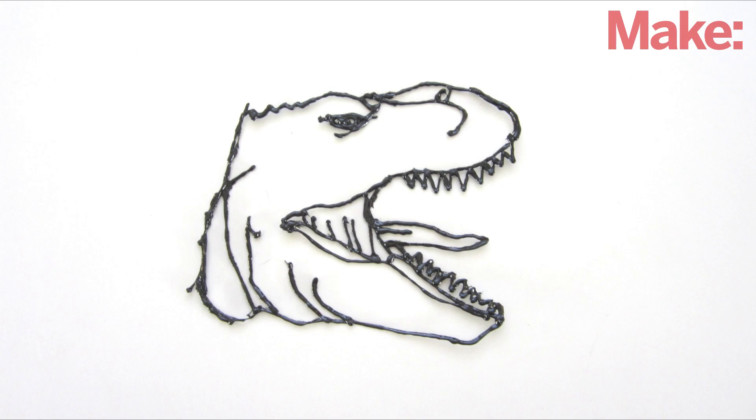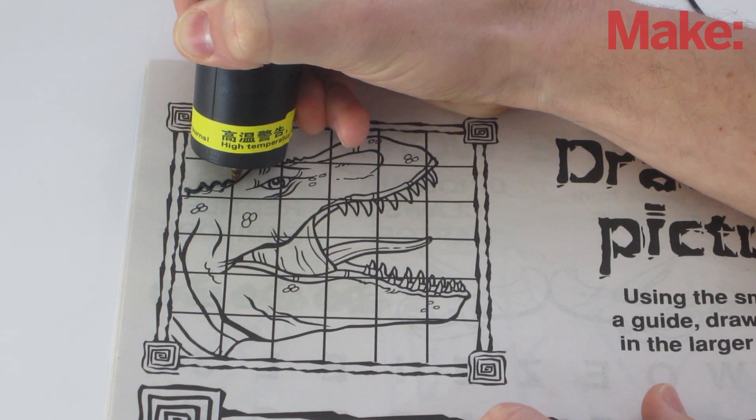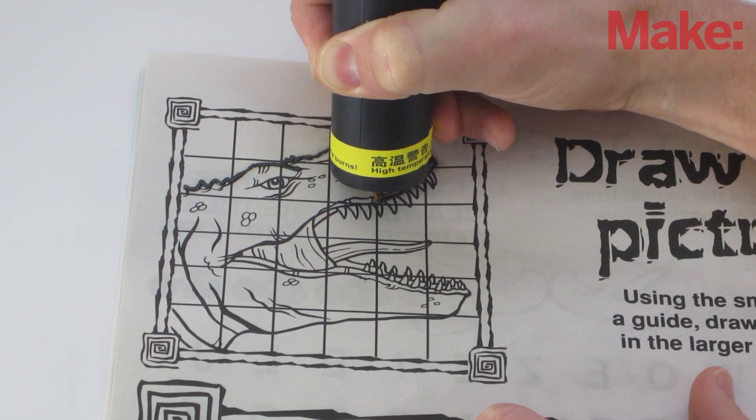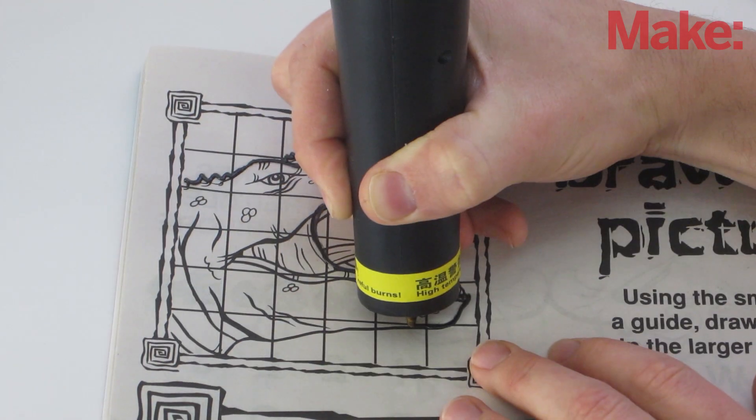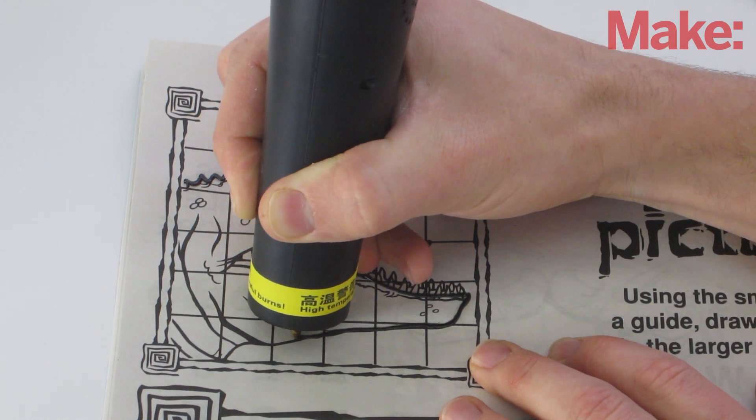The easiest project to start with is a simple 2D sketch. You can either start with a stencil or make up your own design from scratch. Press the extrude button and slowly move the pen across the surface to lay down a line of plastic. Hold the pen close to the paper so that the melted plastic is applied to the surface before it cools.